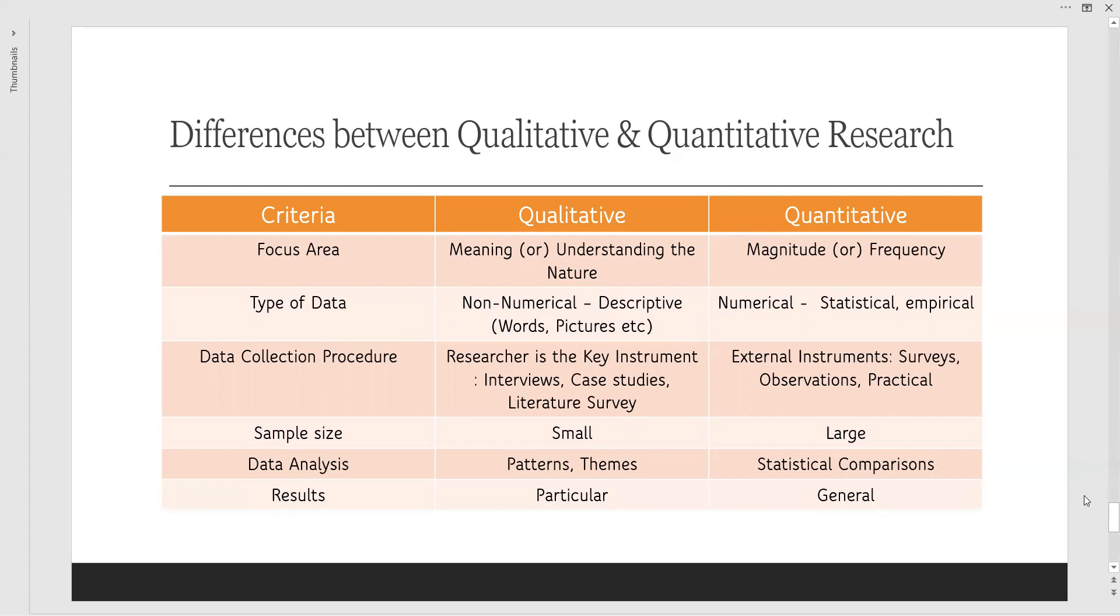Next comes the results. In qualitative it will be like a particular point - exactly a particular point we will discuss about. Whereas in quantitative the explanation of results would be in a generic way, generalized pattern. The final assessment, the final report we prepare based upon qualitative is complete narration, whereas the quantitative is exactly the statistical significant.